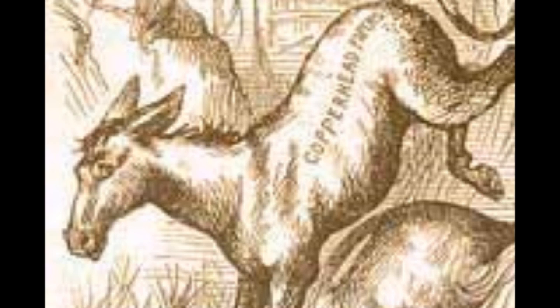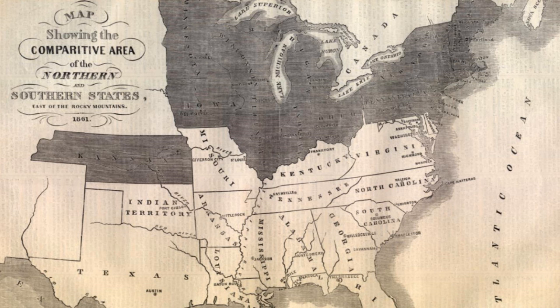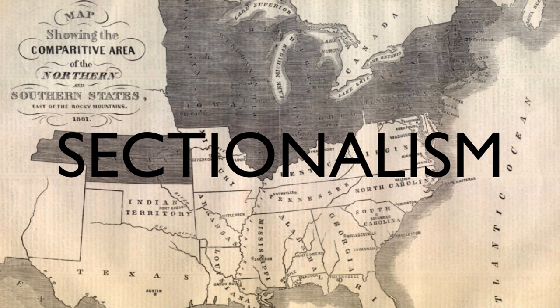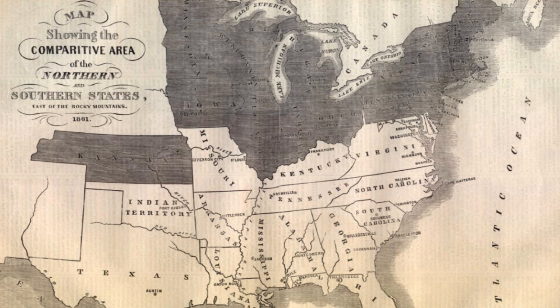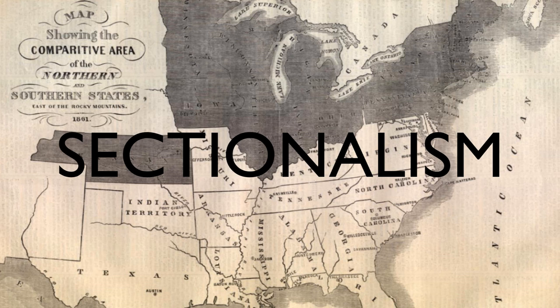Like the Whigs, the Democrats were divided by the Kansas-Nebraska Act, although to a lesser extent. Whilst the majority of Democrats were located in the South and were in full support of slavery, the Northern Democrats felt as though the Missouri Compromise was the fabric that held together two separate sections of the nation and were shocked by its repeal.